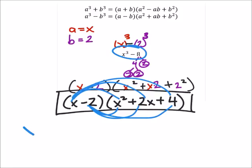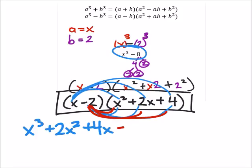This first distribution would give us x cubed. The second one would be 2x squared, and then plus 4x. Then distributing that negative 2, so minus 2x squared, minus 4x, and then minus 8. Hopefully you can see that this 2x squared cancels out that negative 2x squared, and the 4x cancels out the minus 4x.